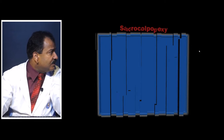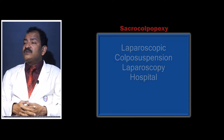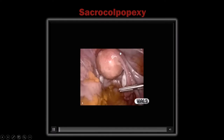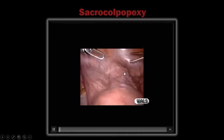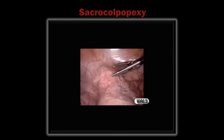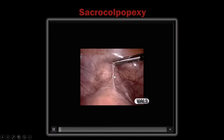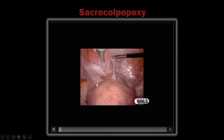Today we discuss vault prolapse and combined cystocele and rectocele repair. Here is the uterus, sacral promontory, ureter, sigmoid colon, fallopian tube, round ligament, ovarian ligament, and ovary. After inserting a uterine manipulator to push the uterus down, you can see the cervix, uterus, vagina, and bladder. The first step is to take a grasper, lift the UV fold peritoneum up, and open the anterior peritoneum all around.